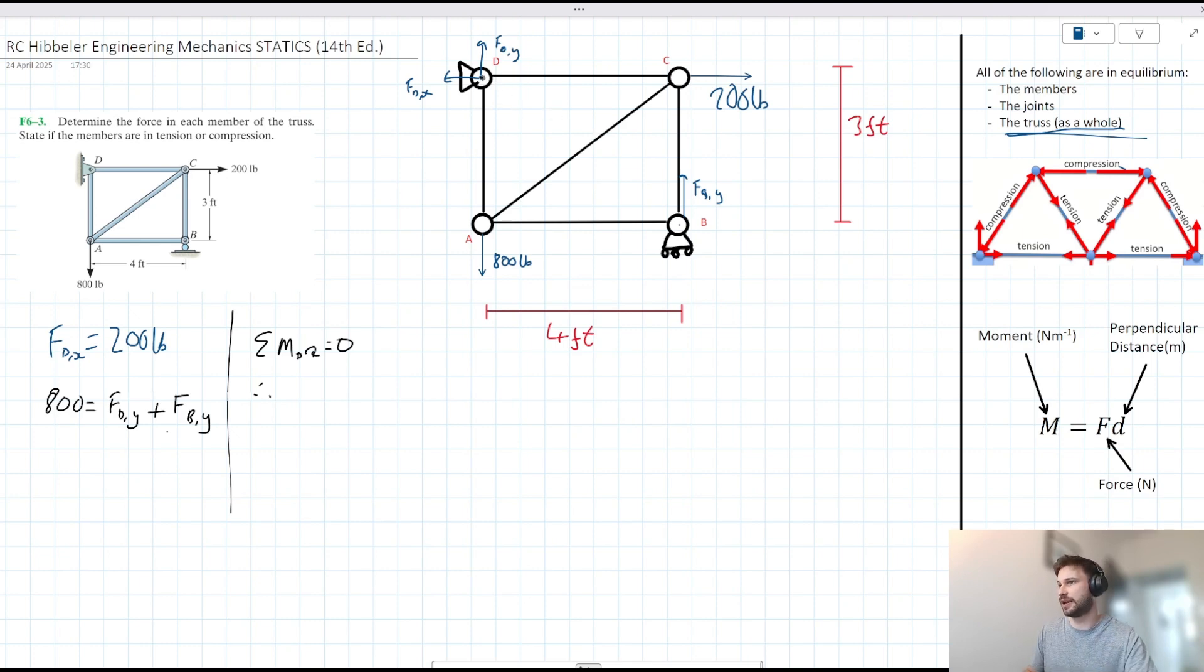What moments do we have acting clockwise? Well, that doesn't have a moment about D. This doesn't have a moment about D. This has an anti-clockwise moment about D. And the anti-clockwise moment there will be for FB-Y. So we can say for FB-Y is equal to 0 since we have 0 clockwise moments. So we have this FB-Y anti-clockwise moment and we have no clockwise moments. Therefore, if you haven't figured it out already, FB-Y is equal to 0.